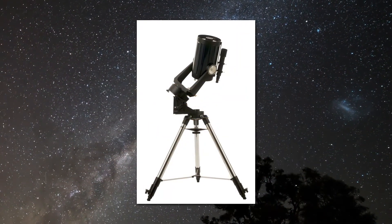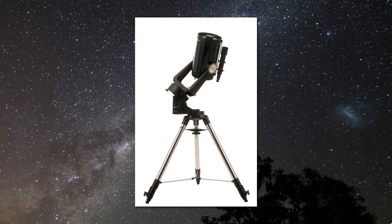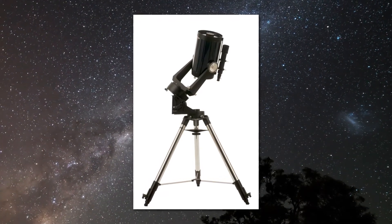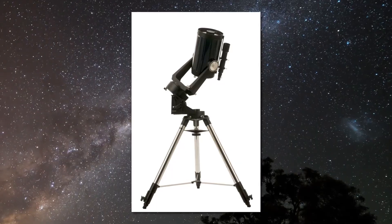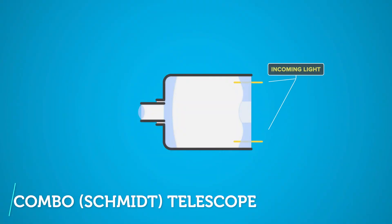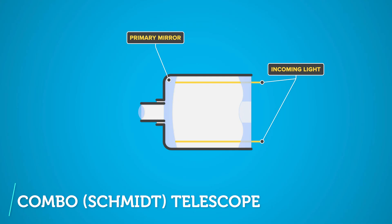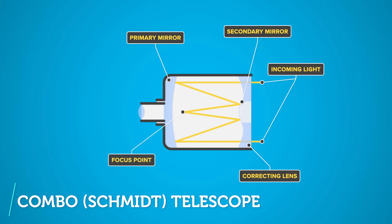In 1931, German lens maker Bernard Schmidt combined the two types of telescopes. The Schmidt telescope uses a concave mirror to collect light. It also has a thin correcting lens. The lens takes away distortion around the edges of a telescope's mirror. That gives users an accurate wide-angle view of the sky.